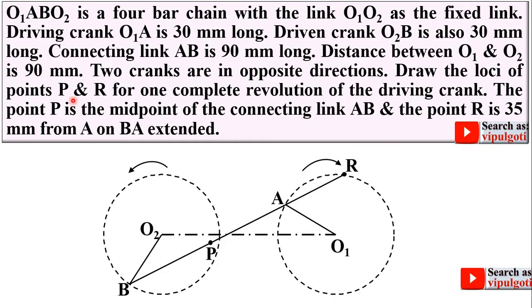Draw the loci of points P and R for one complete revolution of the driving crank. Here the driving crank is O1A. The point P is the midpoint of the connecting rod AB.